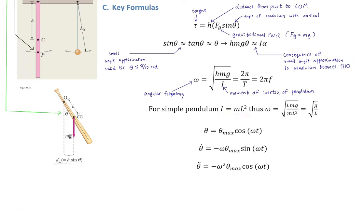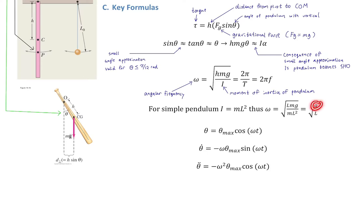For a simple pendulum, the moment of inertia is just mL², which is also the moment of inertia for a tethered point mass or a perfectly thin hoop. Substituting mL² for I, the m's cancel and one L cancels, giving ω = √(g/L) for a simple pendulum. This is very similar to the spring: where k was, now we have g; where m was, now we have L.